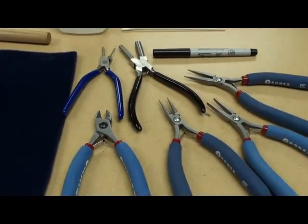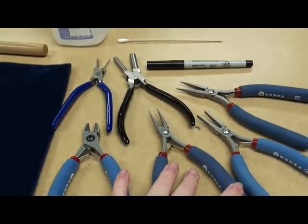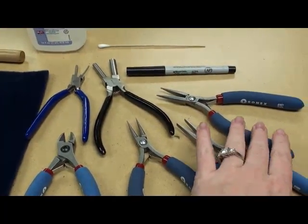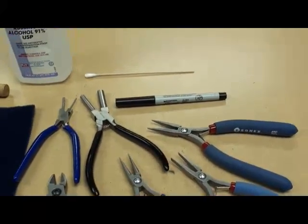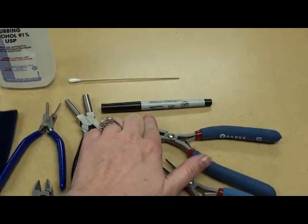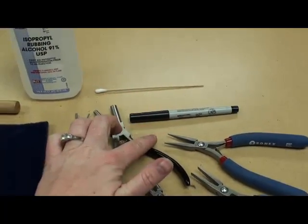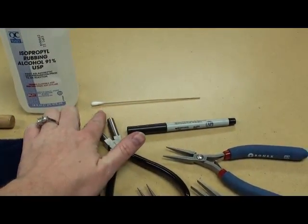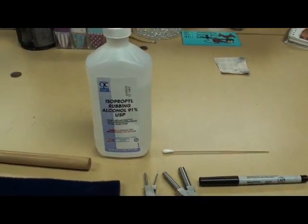Other things that I'm going to need: a good pair of cutters, round nose pliers, flat nose and chain nose pliers. I also need to have a sharpie for some of these, and then to remove that sharpie I have a Q-tip and just regular old rubbing alcohol.